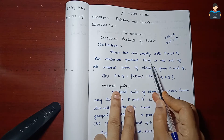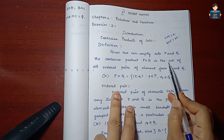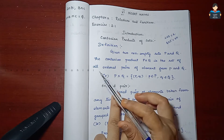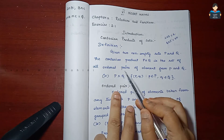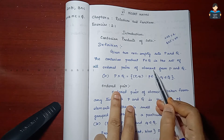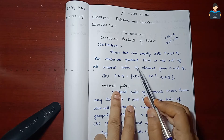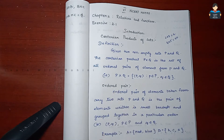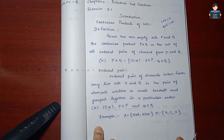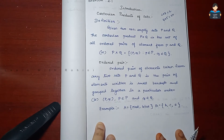P cross Q is the set of all ordered pairs of elements.